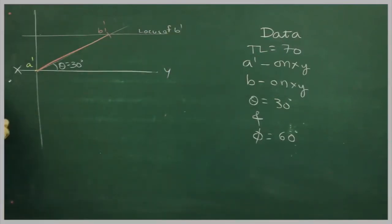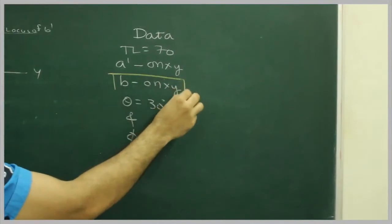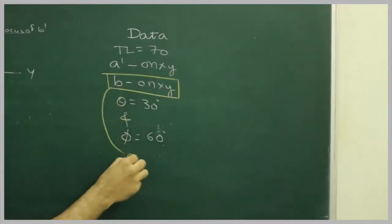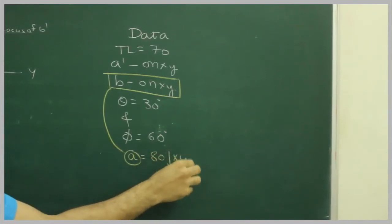After that, if you see they have given angle phi, but we can't use that angle. So what we will do, we will assume instead of b on xy line, we will assume a is 80mm below xy.